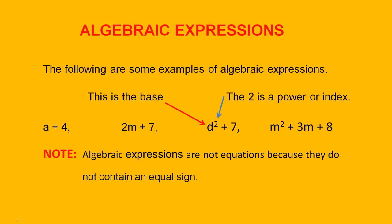Algebraic Expressions. The following are some examples of algebraic expressions: A plus 4, 2m plus 7, d squared plus 7 and m squared plus 3m plus 8.